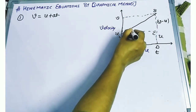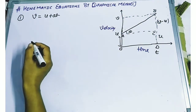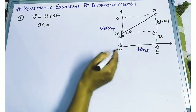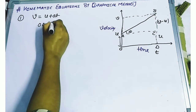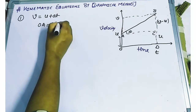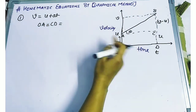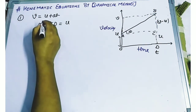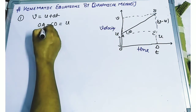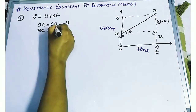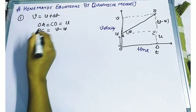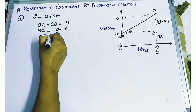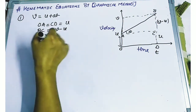Let this make an angle theta with A. So we can say OA equals CD because it is a rectangle — parallel sides are equal, so both are u. BC is v minus u. And OD is simply representing the time period.